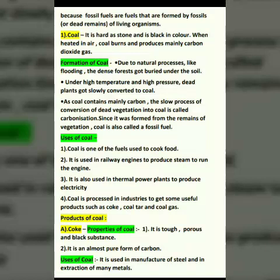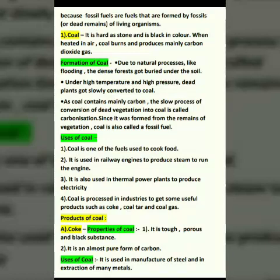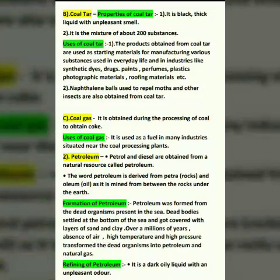The first product of coal is coke. Properties of coke: it is tough, porous, and black in substance. It is almost a pure form of carbon. Uses of coke: it is used in the manufacturing of steel and in the extraction of many metals.